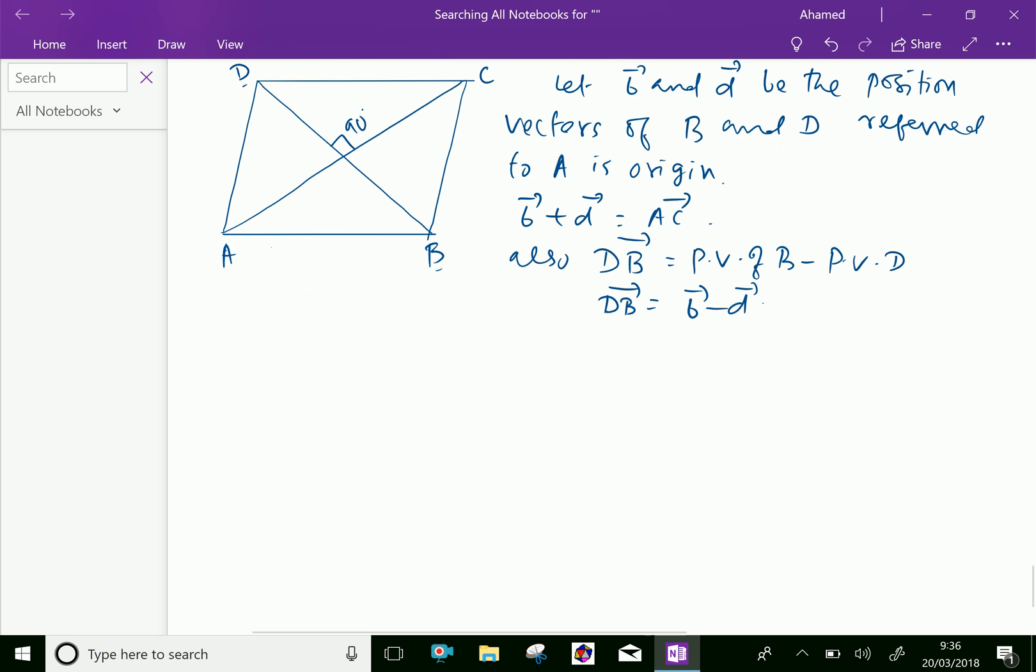Now here, since ABCD is a rhombus as given, then AB equals AD because all sides are equal in a rhombus.